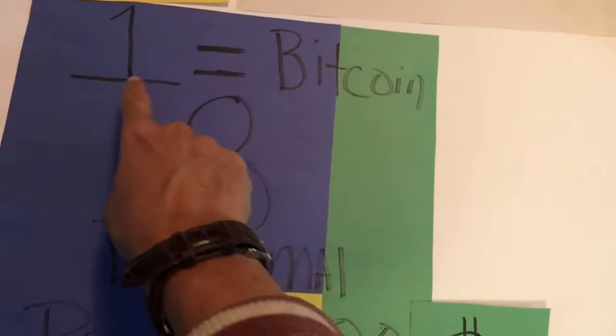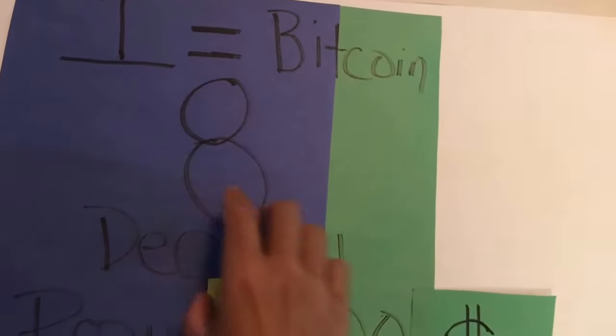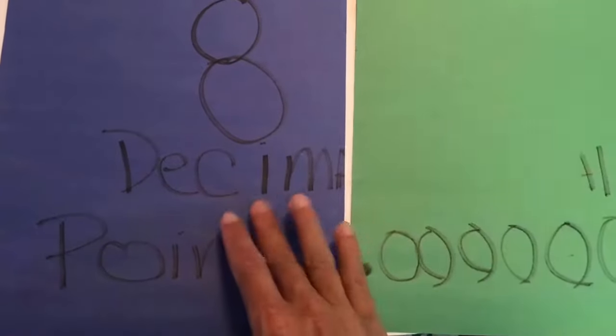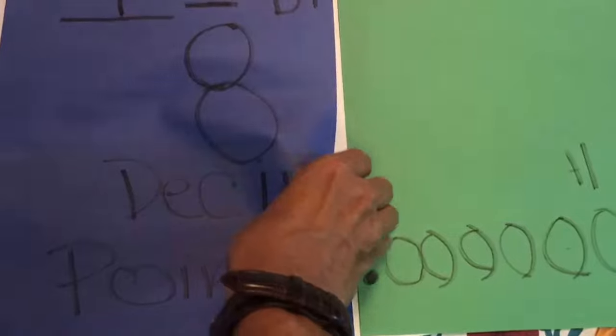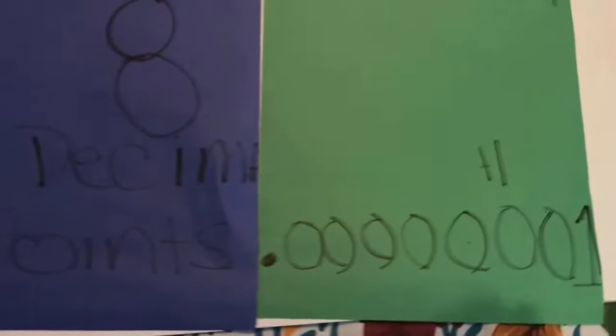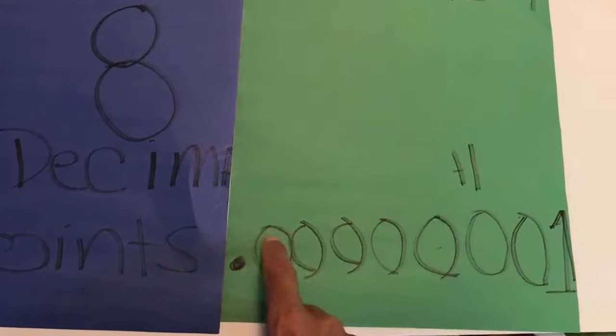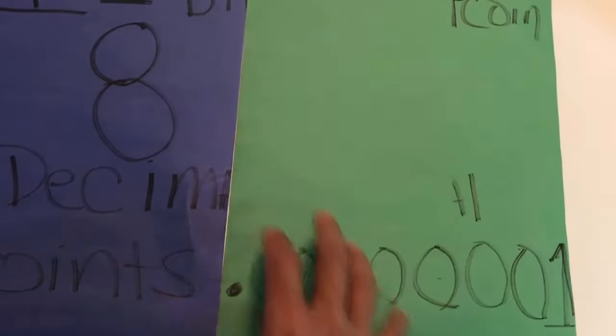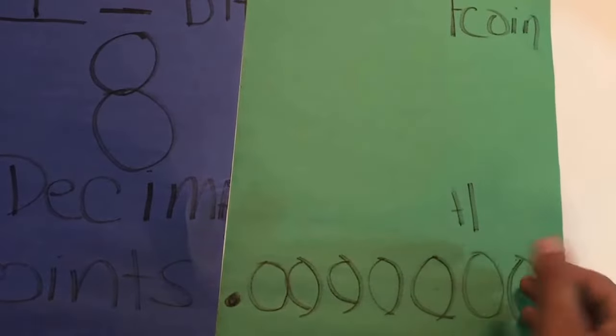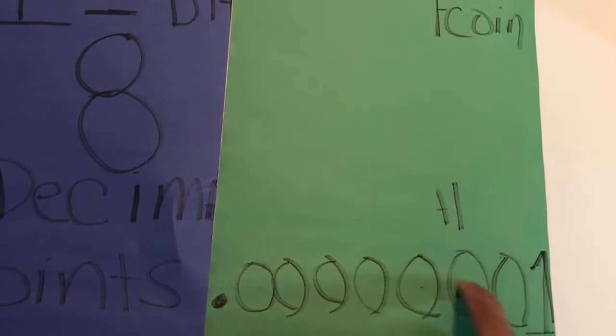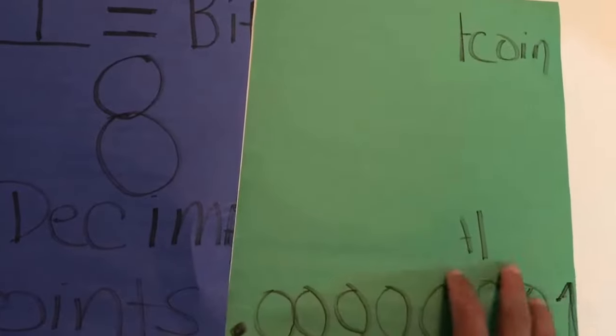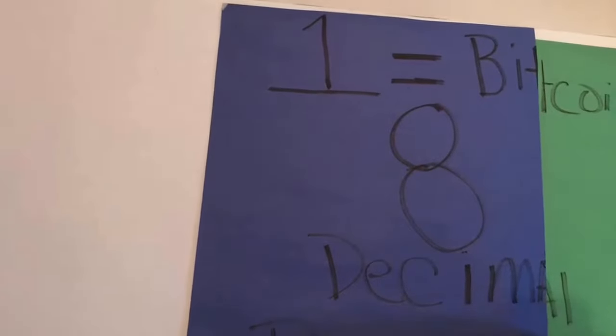One Bitcoin is broken into eight decimal points. When people say 'stack up satoshis,' they're referring to the smallest denomination — a one with seven zeros in front of it — and the idea of stacking those up to eventually create that one whole Bitcoin.